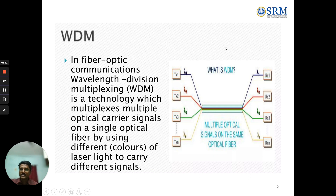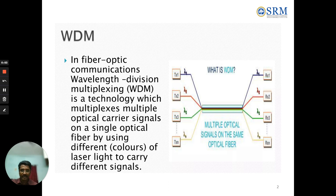It is called WDM. In fiber optic communications, Wavelength Division Multiplexing is a technology which multiplexes multiple optical carrier signals on a single optical fiber. Multiple carrier signals share a single optical fiber, and they are differentiated by using different colors of laser light to carry different signals. That is the technique of WDM.